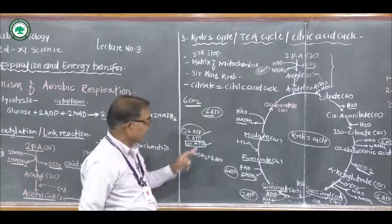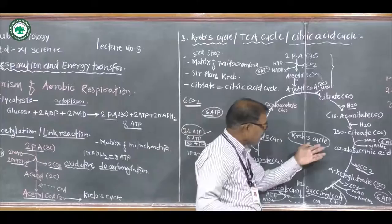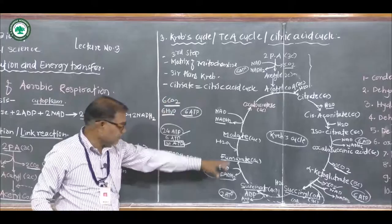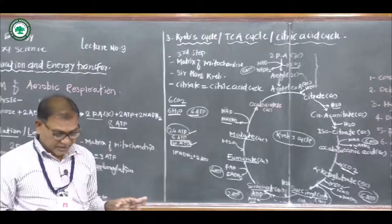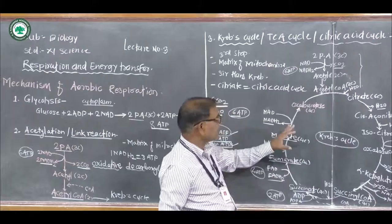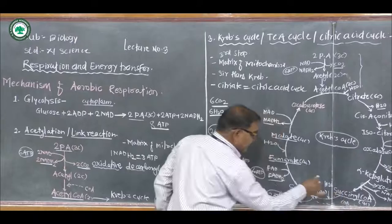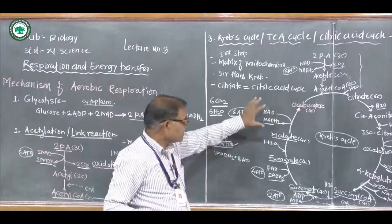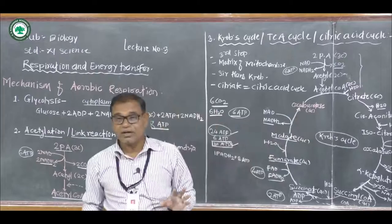How many molecules of water are released? Three times, meaning 6 water molecules are removed during the breakdown of pyruvic acid. How many four-carbon-containing compounds are synthesized within the matrix of mitochondria? First, succinyl coenzyme A; second, succinate; third, fumarate; fourth, malate; and fifth, oxaloacetate — that is 5 organic acids containing 4 carbons.